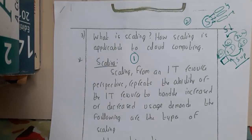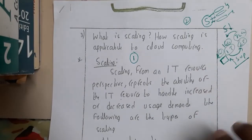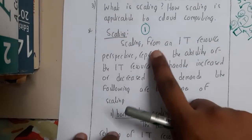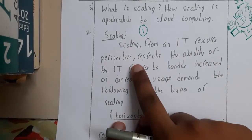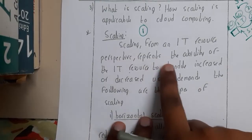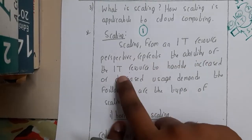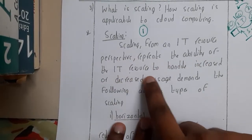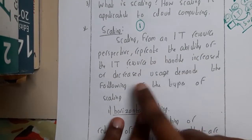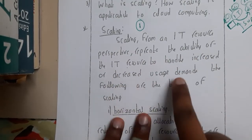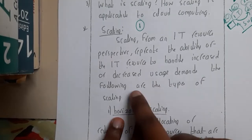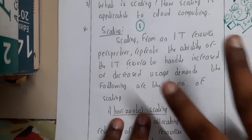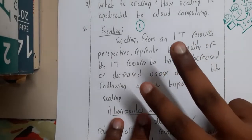Scaling, from an IT resource perspective, represents the ability of IT resources to handle increases or decreases in user usage demand. There are three types: horizontal scaling, vertical scaling, and auto scaling.